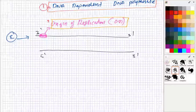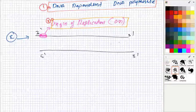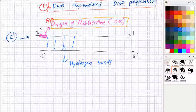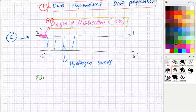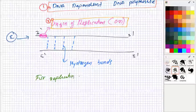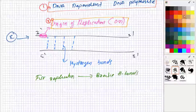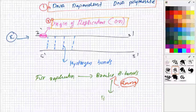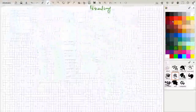Everybody knows that the two strands of DNA are linked by bonds. What kind of bond is that? That is a hydrogen bond. So for replication, in order to carry out replication, we have to break those hydrogen bonds and separate the two strands. You know that to break a bond, we have to supply energy. We have to supply energy to the hydrogen bonds, and the bond will break and the strands will separate.